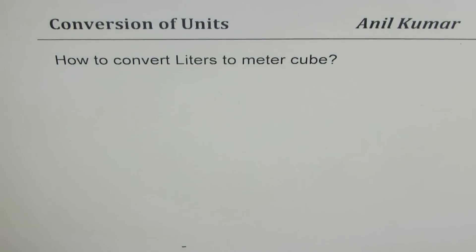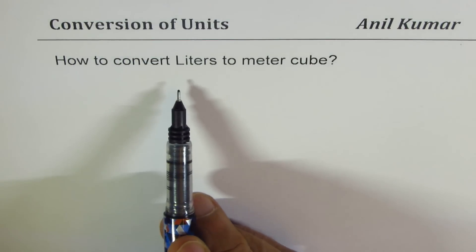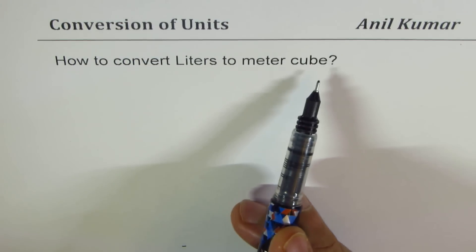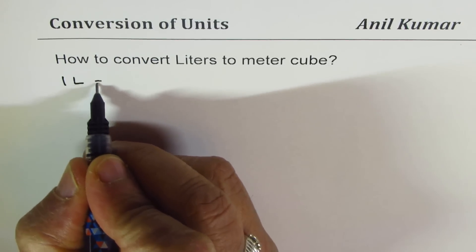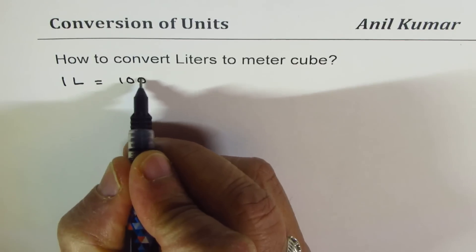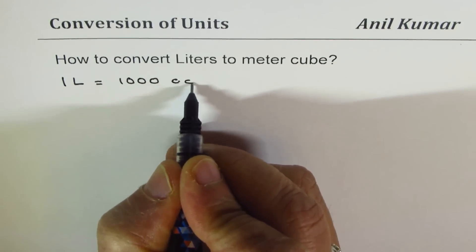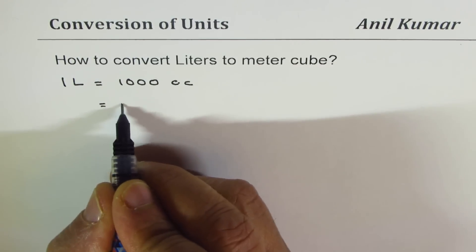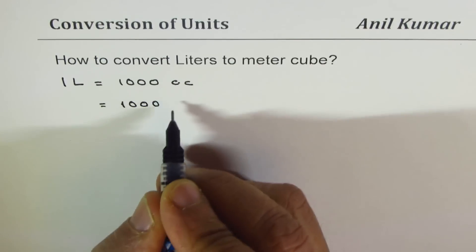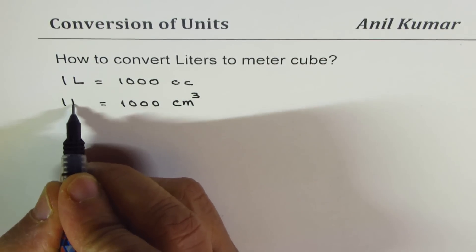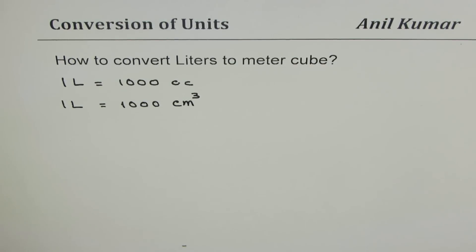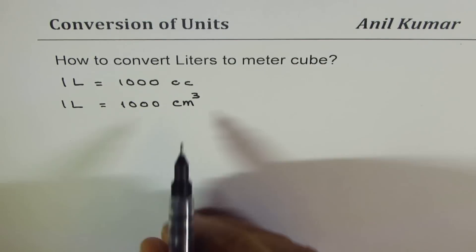I'm Anil Kumar. In this video we'll continue with conversion of units and see how to convert liters to meter cube. As you know, one liter is equal to 1000 cc or 1000 centimeter cube. Now we need to convert this to meter cube.